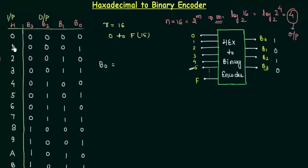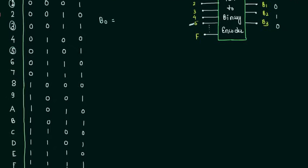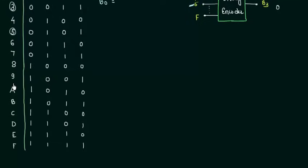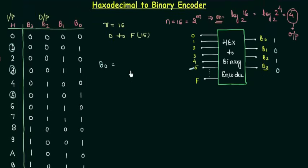It is high for the input 1, 3, 5 or you can say that for all the odd, for all the odd, you can see 7, 9, this is your 11. For all the odd inputs B0 is high. So I will write 1 or 3 or 5 or 7 or 9 or 11, 13, 15 and I will write 11 as B, 13 as D and I will 15 as F.